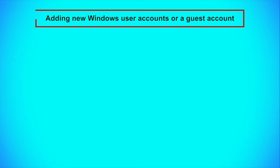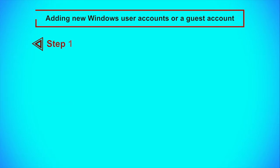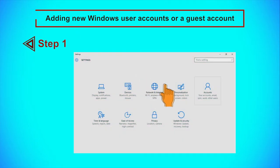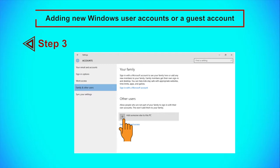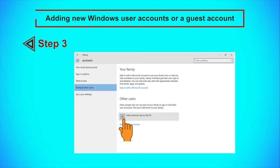Now let us see how to add new Windows user accounts or a guest account. Step 1: Select Accounts through your Settings menu. Step 2: Select the Family and Other Users tab on the left side of the Account Settings window. Step 3: Click the plus sign next to Add Someone Else to This PC under Other Users. Step 4: Through the following window, click on the I don't have this person's sign-in information link.